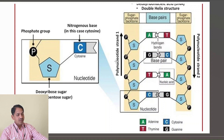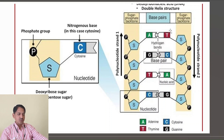This is one strand of DNA, and this is the second strand — both made up of the three components: sugar, phosphate, and nitrogenous bases.